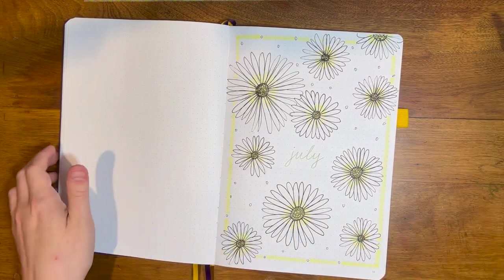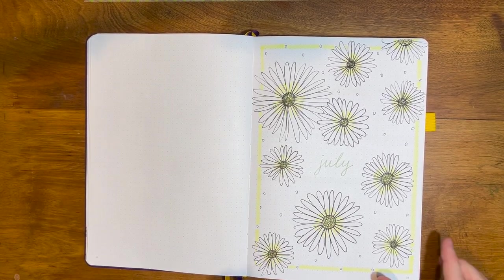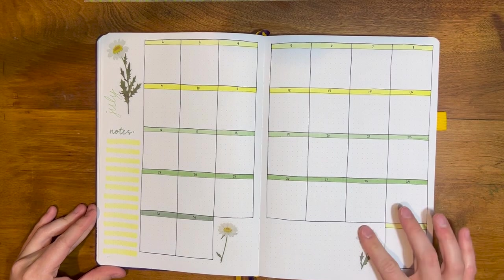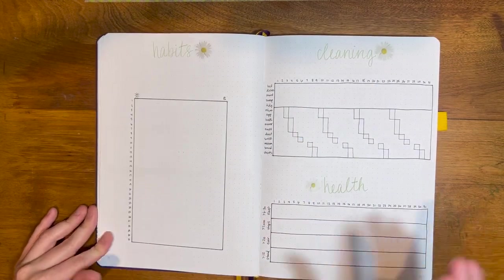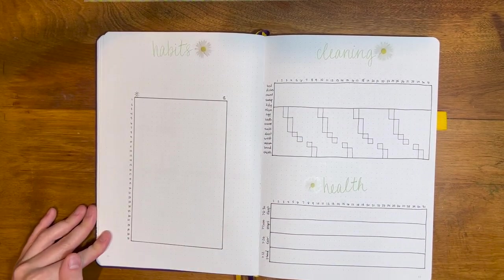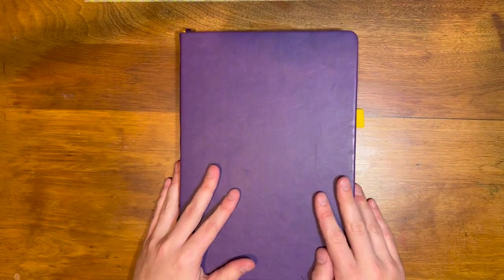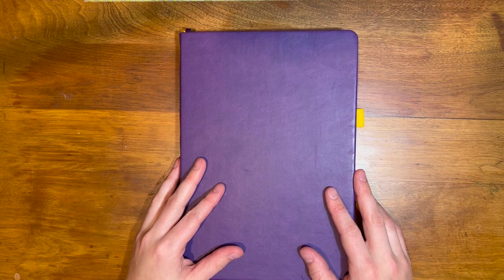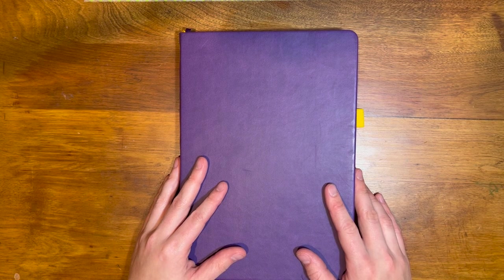Ta-da, there it is. All right, this is pretty much the July bujo journal all set up. We've got my cover page, my calendar spread with a few daisy stickers around, I just gotta add all my plans for the month, we've got my habit tracker, vertical habit tracker this time around, cleaning and health trackers, and my reading trackers. That's all we've got for today folks. Thank you so much for watching this time around. Set up video, like it on your way out. Consider subscribing to my channel if you would like to see more bookish and bullet journaling content from me. Comment down below what you are looking forward to in the month of July, and I will see you in the next one. Bye bye!